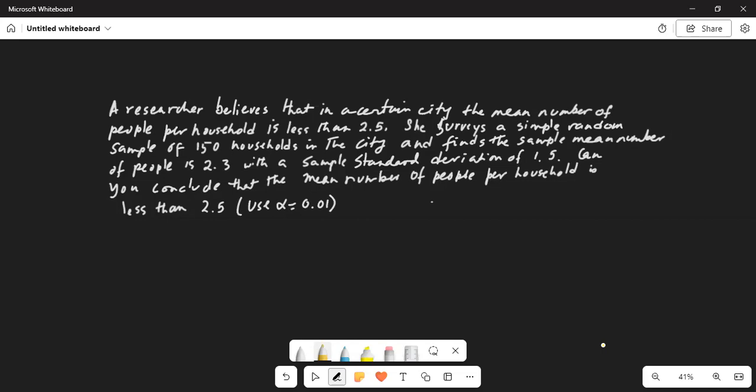A researcher believes that in a certain city, the mean number of people per household is less than 2.5. She surveys a simple random sample of 150 households in the city and finds the sample mean number of people is 2.3 with a sample standard deviation of 1.5. Can you conclude that the mean number of people per household is less than 2.5?